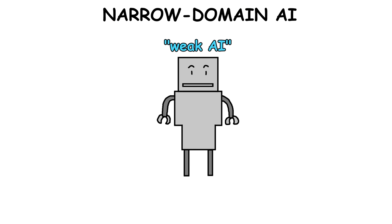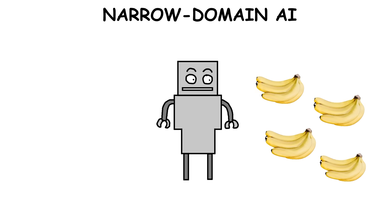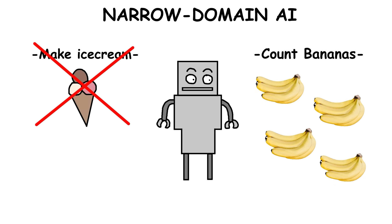Narrow domain AI. Also called weak AI, this type of artificial intelligence is made to do one specific task really well. It's super focused on one job and often outperforms humans in that area, but it can't do anything outside of its specialty.